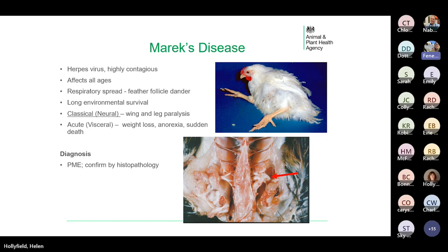In the acute form, tumours form in visceral organs, so affected birds may show signs of weight loss or anorexia, or they may just present as sudden deaths. Diagnosis is based on finding lesions at post-mortem, confirmed by histopathology. The top photo shows a bird with Marek's disease displaying classical leg paralysis, and in the bottom photo the red arrow points to an enlarged sciatic nerve — the normal nerve is shown on the left for comparison.